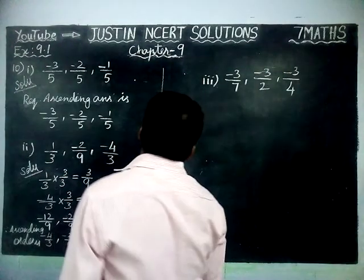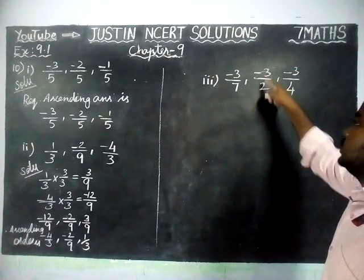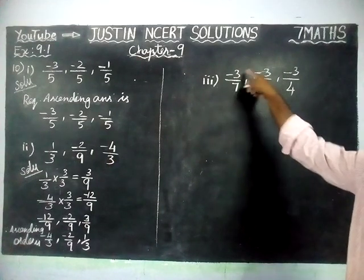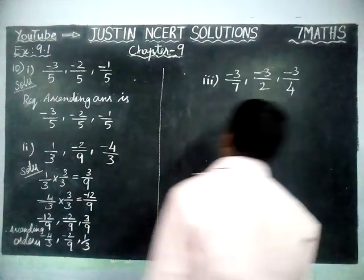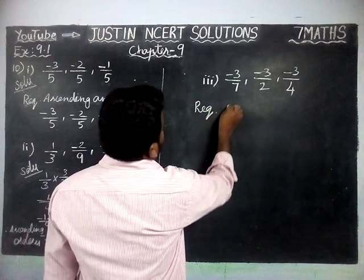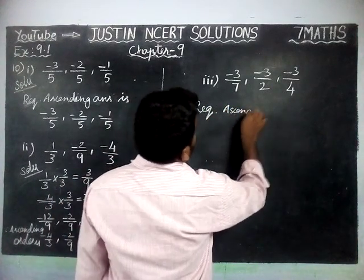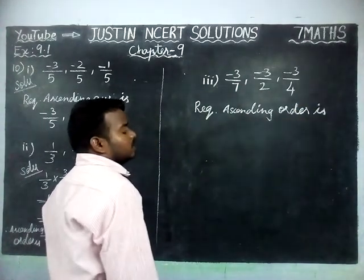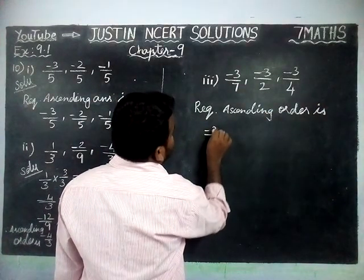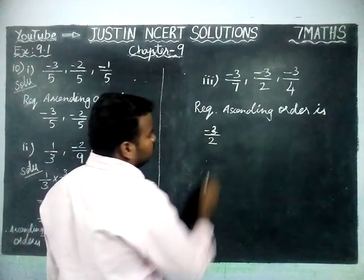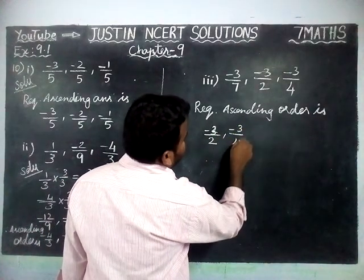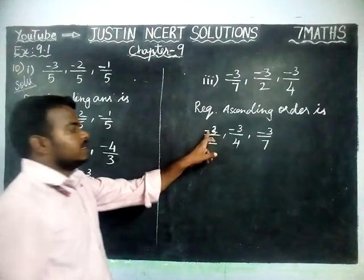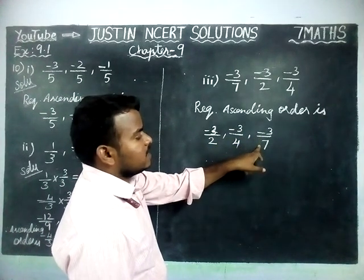Next, the third part: minus 3 by 7, minus 3 by 2, minus 3 by 4. Here, all the numerators are equal. When numerators are equal, we have to consider only the denominator. The required ascending order starts from the largest denominator value. Minus 3 by 2 is the smallest value, next is minus 3 by 4, and minus 3 by 7 is the highest value.